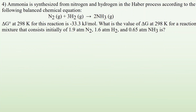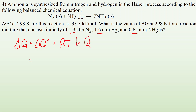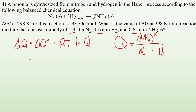Number four: ammonia is synthesized from nitrogen and hydrogen in the Haber process. Delta G0 at 298 K for this reaction is negative 33.3 kilojoules per mole. We need to find delta G at 298 K for a reaction mixture that consists of given initial pressures of each component. Using: delta G equals delta G0 plus RT times ln of Q, where Q is the reaction quotient — NH3 squared in the numerator (coefficient of 2) divided by N2 times H2 cubed (coefficient of 3).